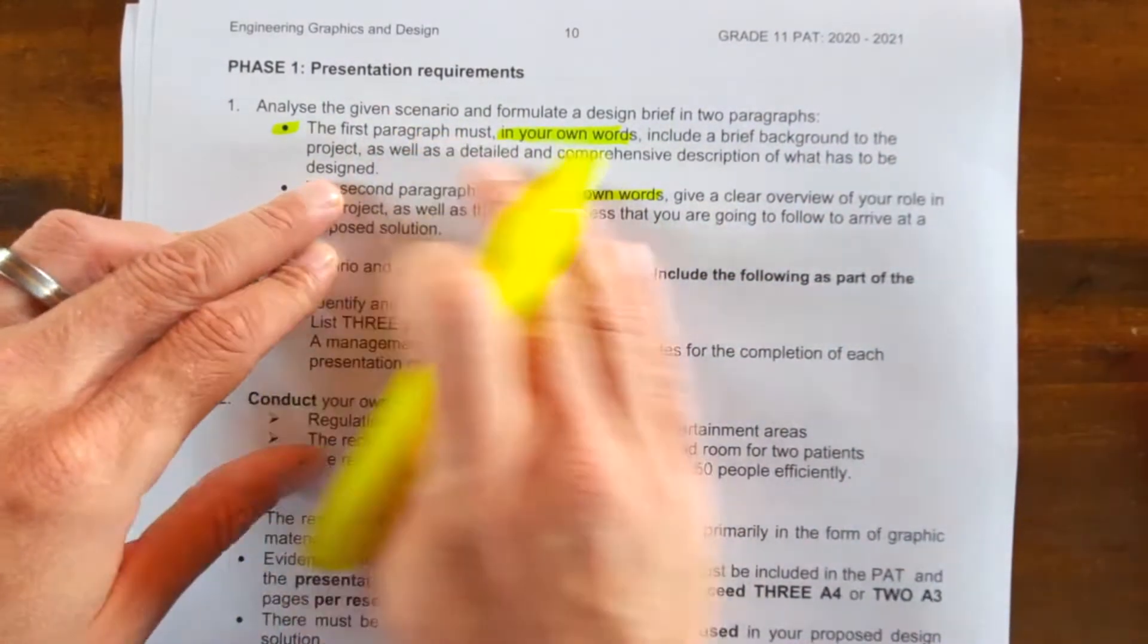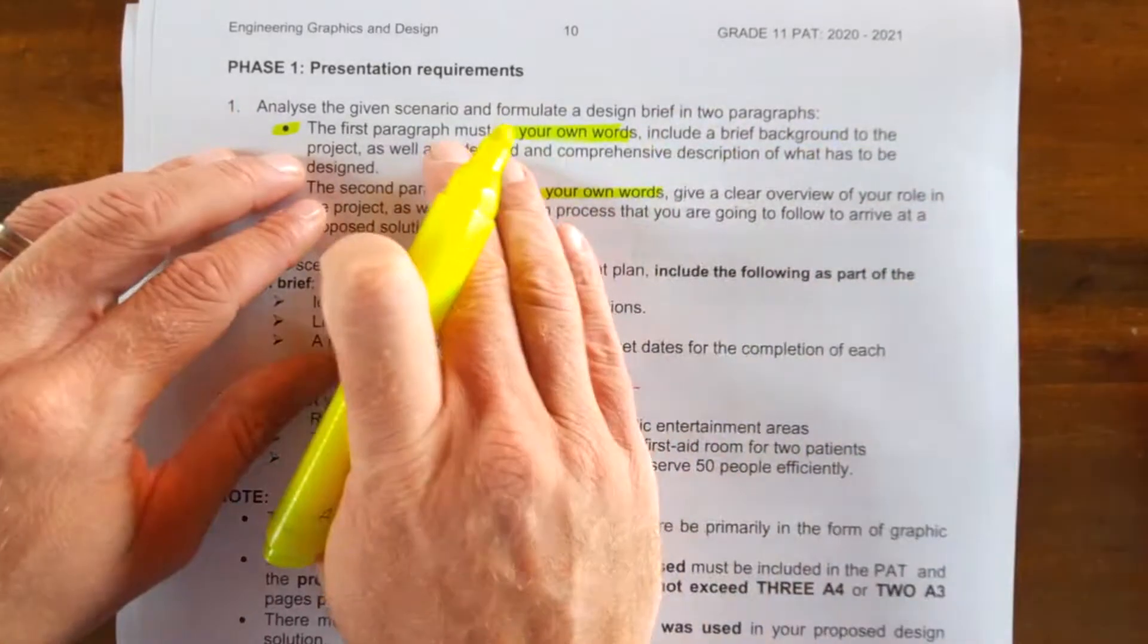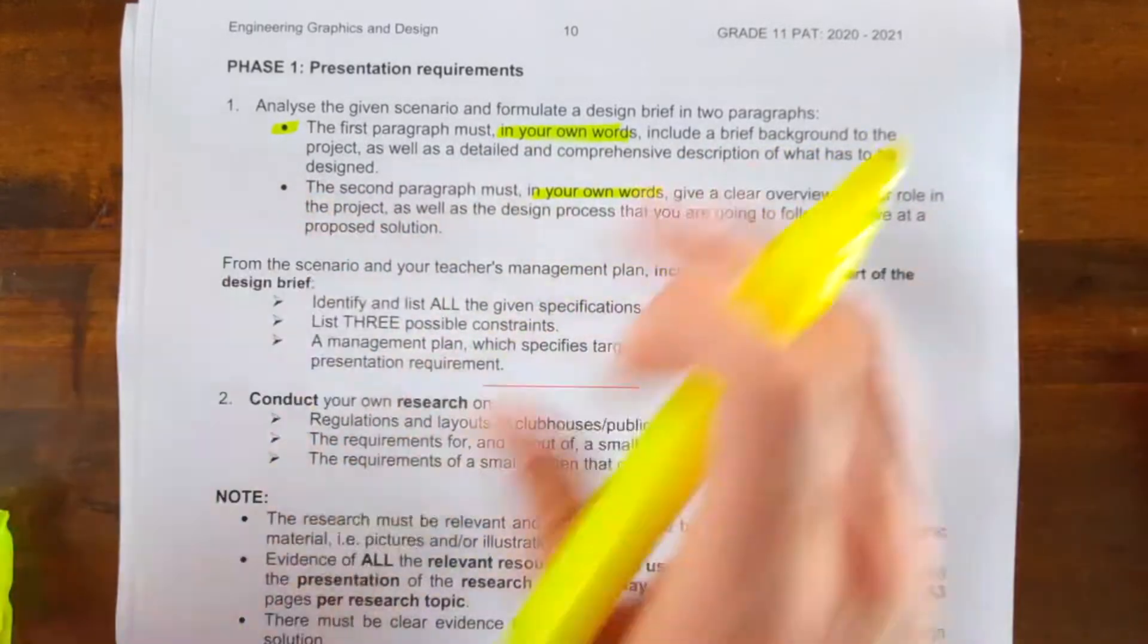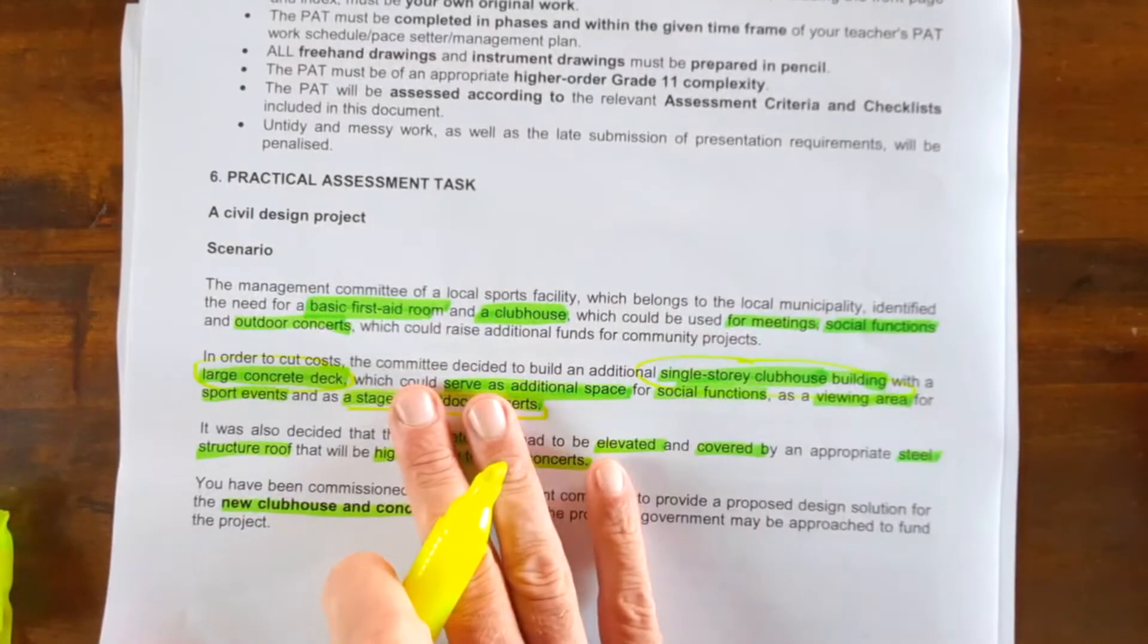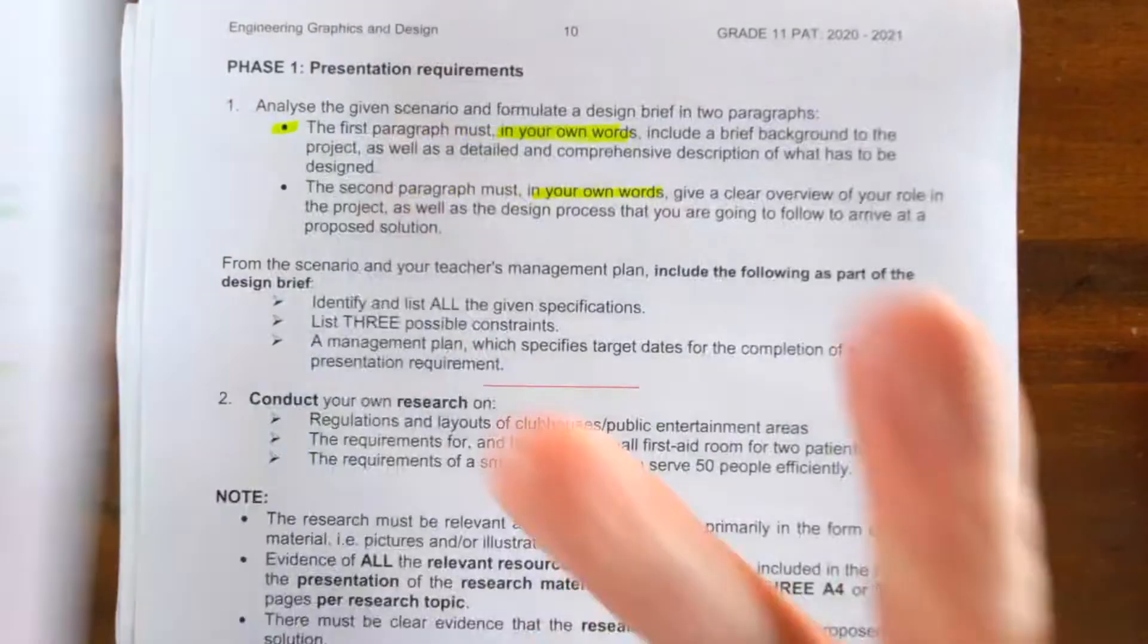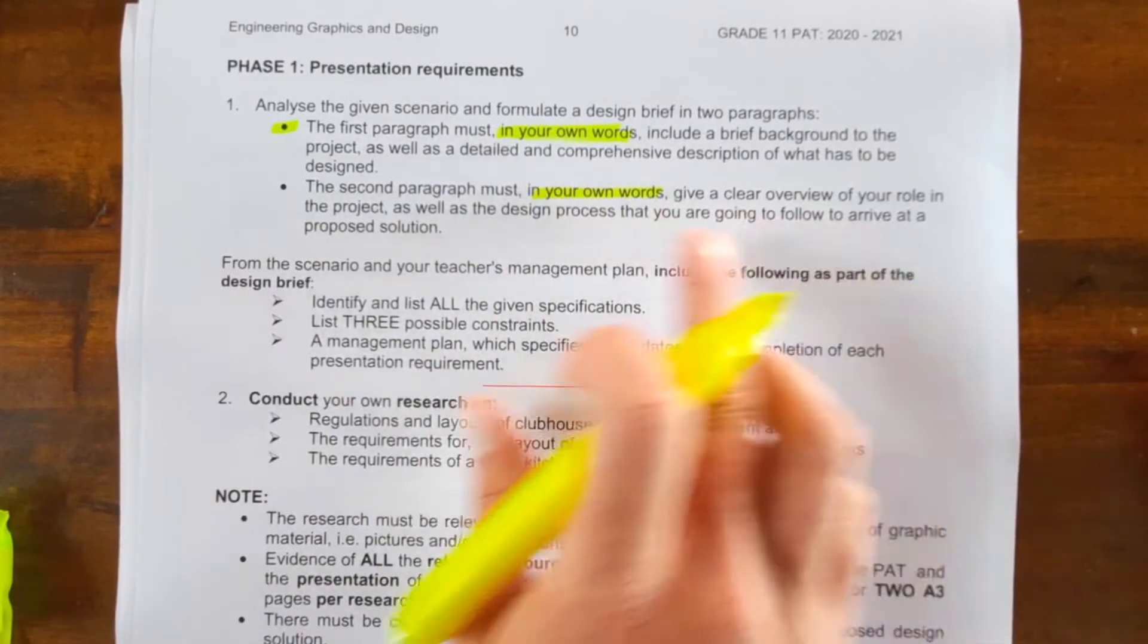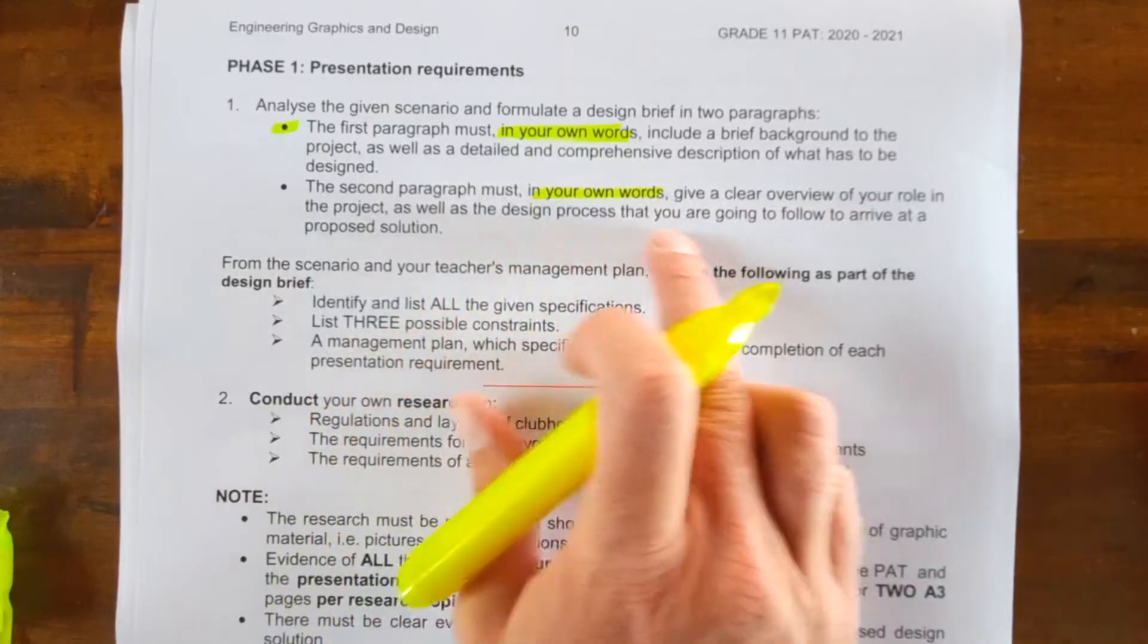Basically that states the primary problem that you're going to solve, and you can elaborate a little bit on that description using some of the wording that we've highlighted here. The second paragraph must again be in your own words, and now you're going to give an overview of the process that's going to be followed.